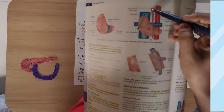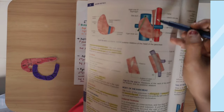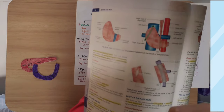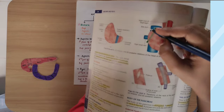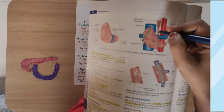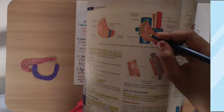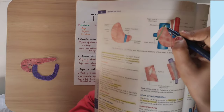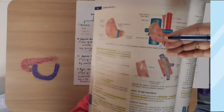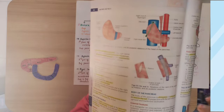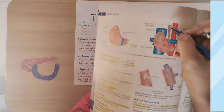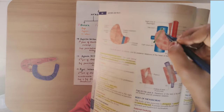The right crus of the diaphragm — whose tendon is elongated — comes into posterior relation with the head of the pancreas. So the four structures in contact with the posterior surface of the head are: first, inferior vena cava; second, renal veins; third, right crus of the diaphragm; fourth, bile duct.